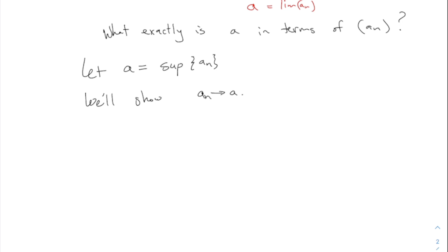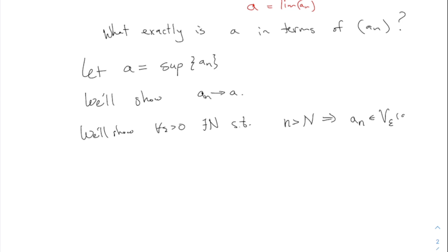For the purposes of this proof, I'll use what I called the topological version. I'll show that for all ε > 0, there exists N such that n > N implies a_n ∈ V_ε(a). V_ε(a) means the small interval around a of radius ε — on the picture, it goes from a - ε up to a + ε. That's the set V_ε(a). That's the definition of convergence.